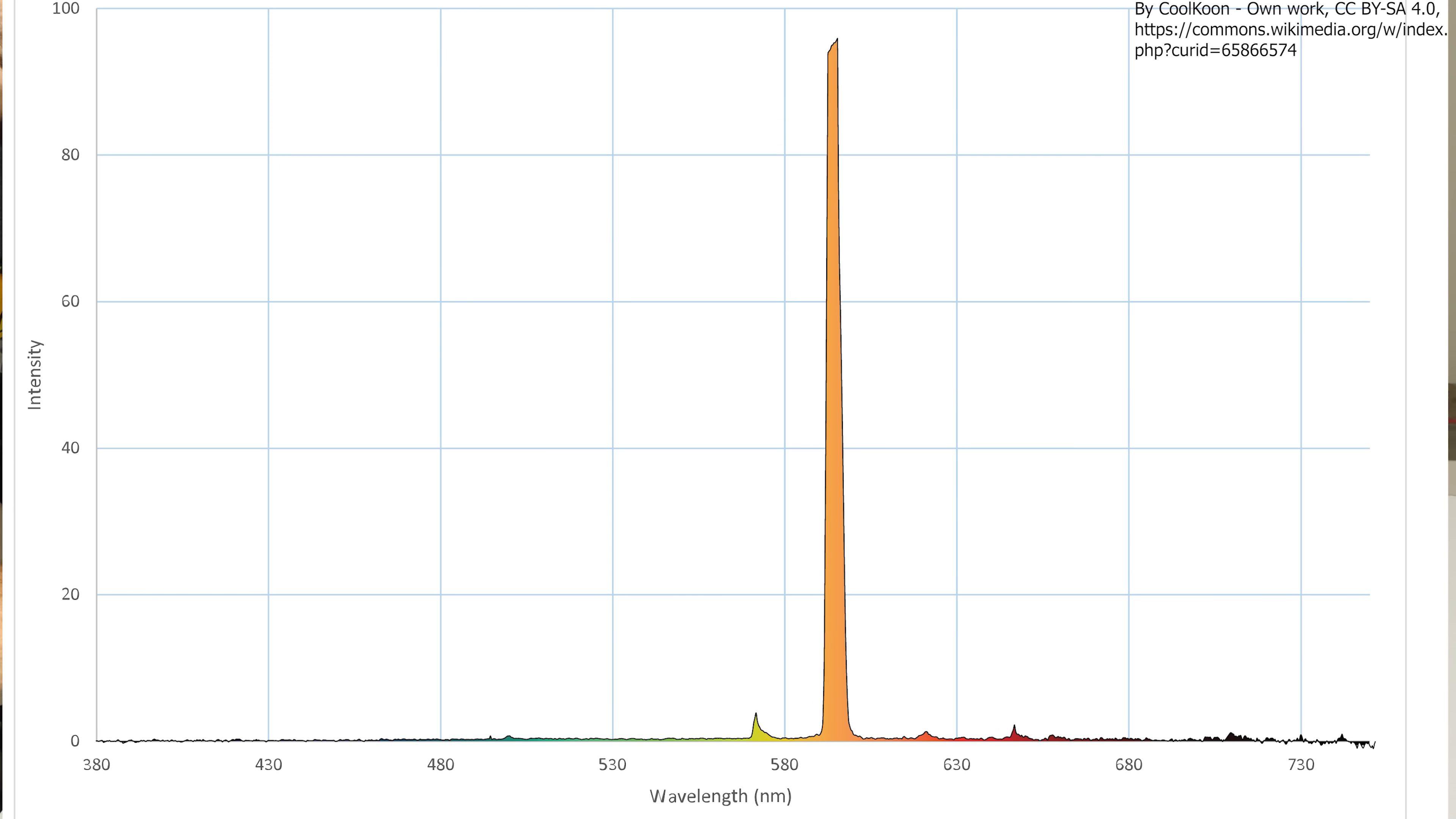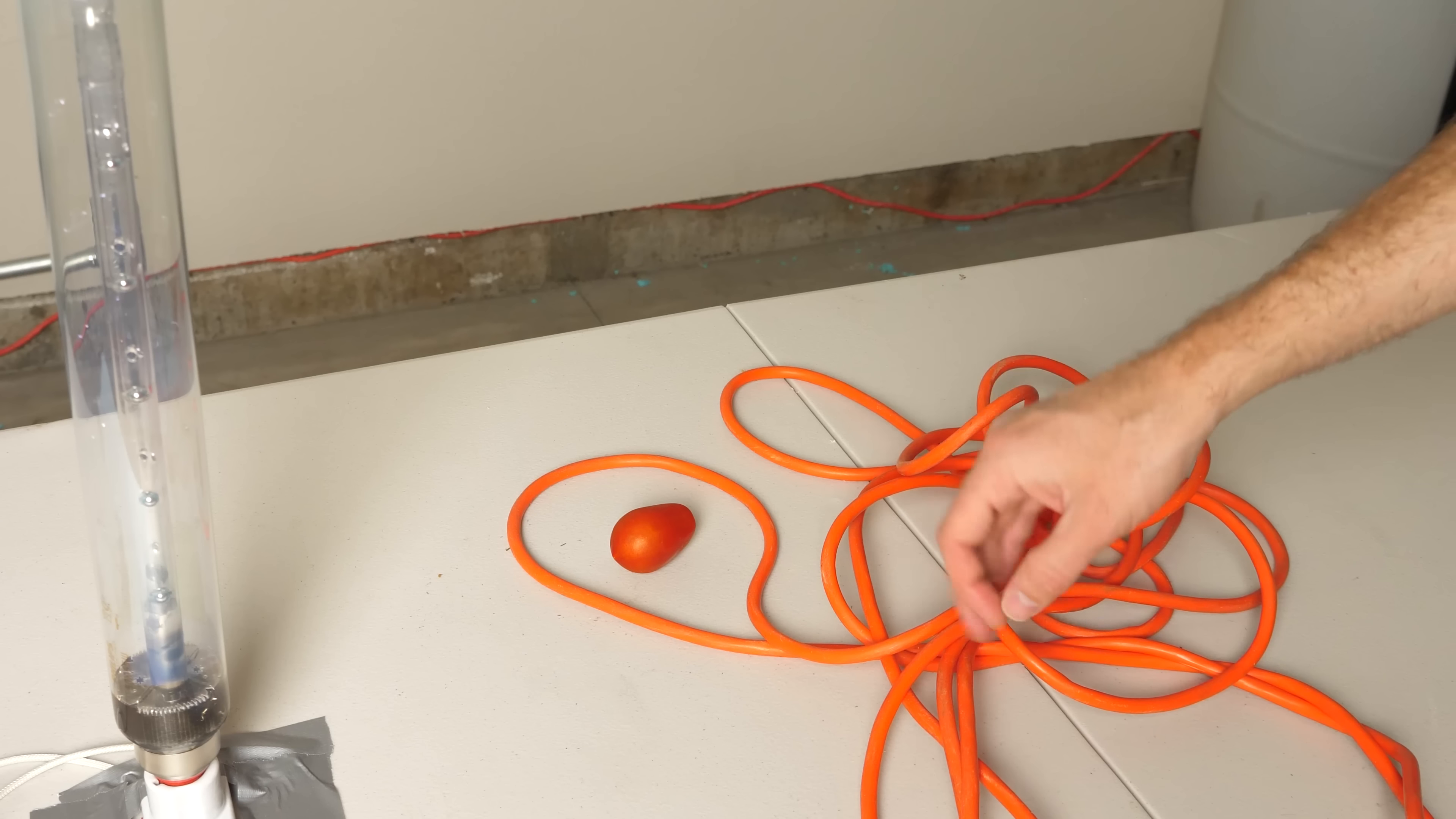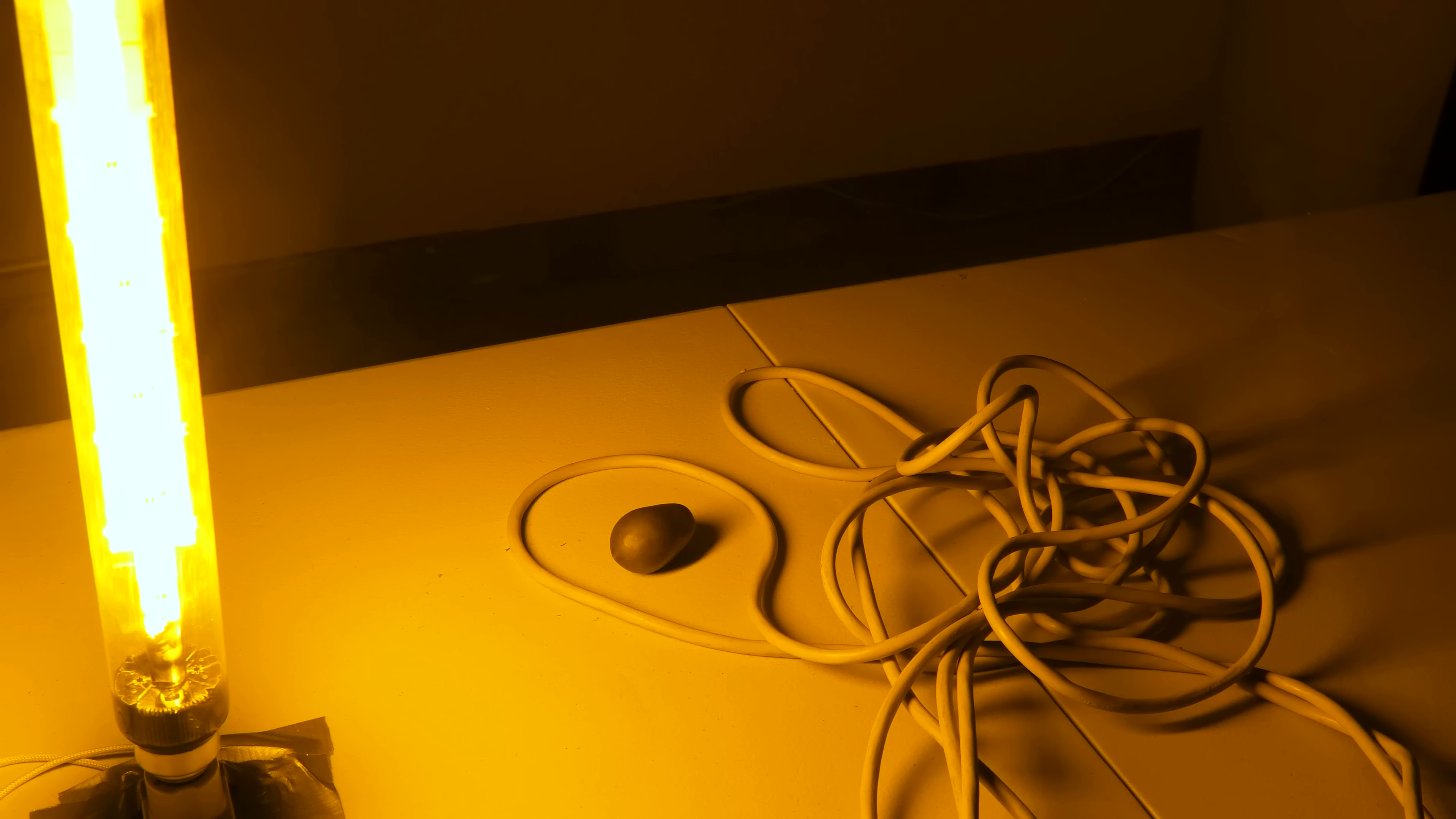Once the light bulb heats up, the sodium is vaporized and gives off a yellow glow at around 589 nanometers. These types of lamps are typically used in parking structures and bridge underpasses because they're very bright and very energy efficient. But one of the downsides of this type of light bulb is that it's actually orange in color and gives off only a single wavelength of light, so it makes everything look monochromatic like this.